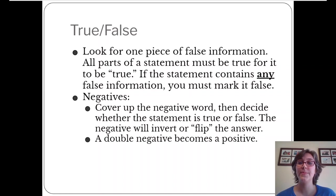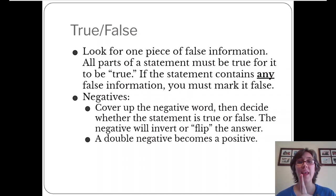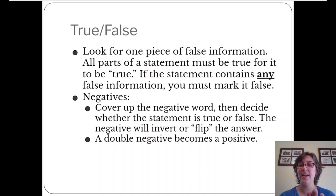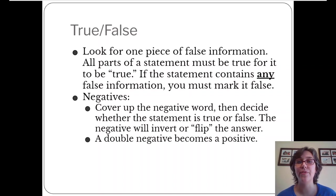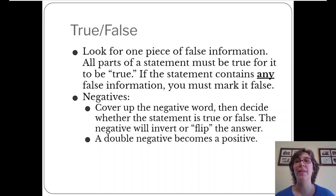Next, let's talk about true-false questions. True-false questions are pretty easy because you just have to find one feature that makes the question false, and then the whole thing is false. All parts of a statement must be true for it to be true. When you have true-false questions with negatives in them, cover up the word 'not' and decide if the remaining statement is true. If it is true, then the negative statement in your test has to be false. It inverts the answer — a double negative becomes a positive.